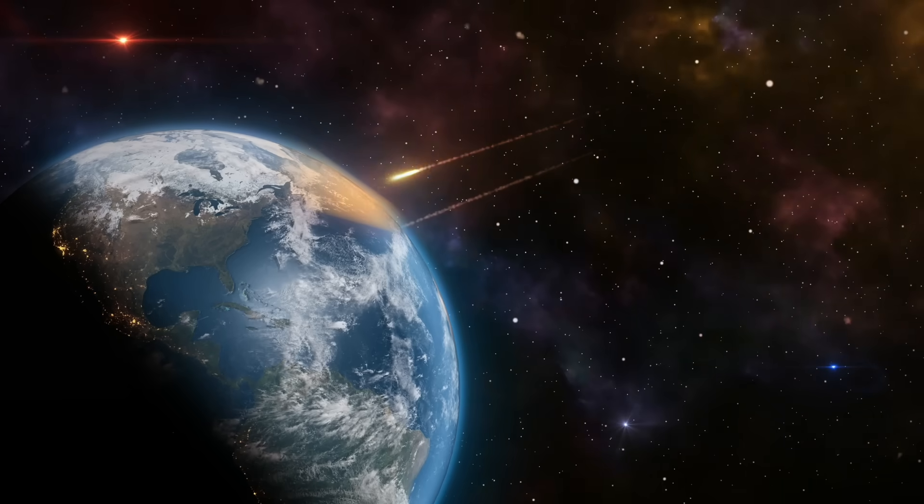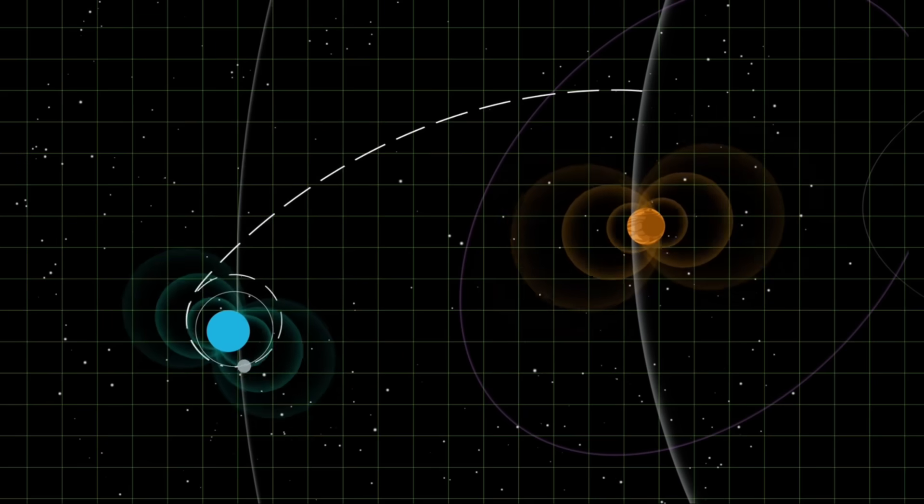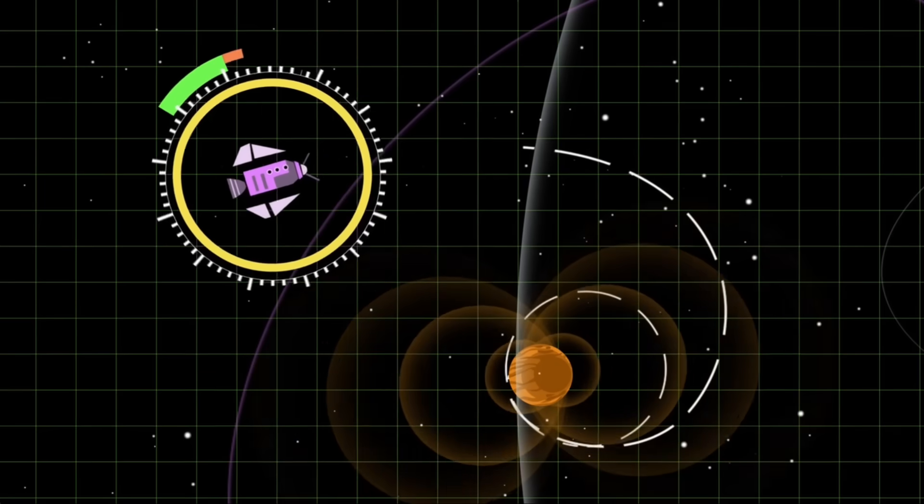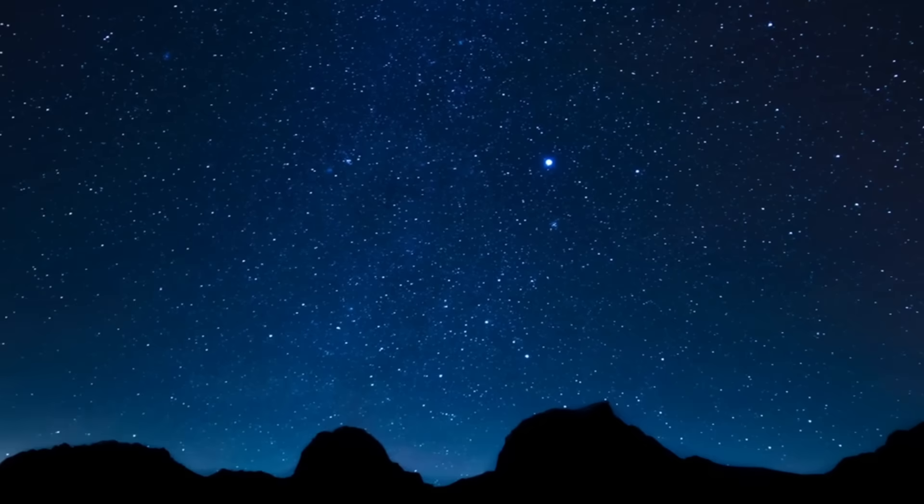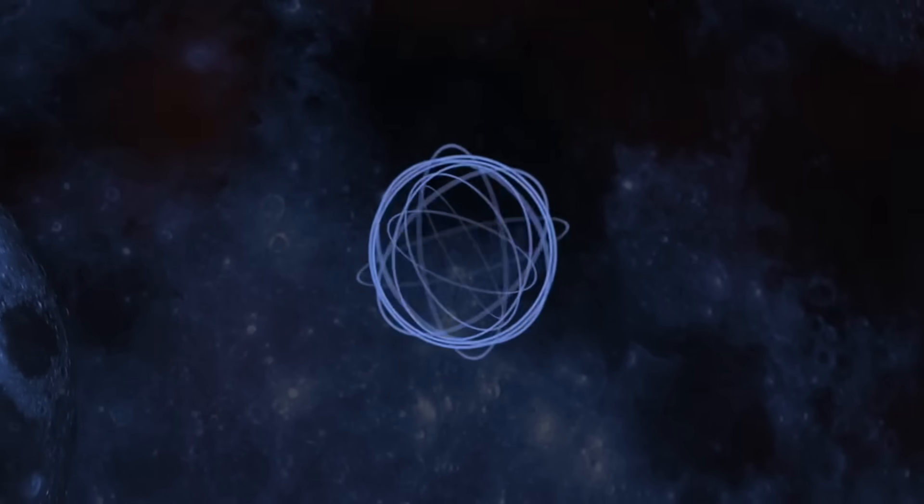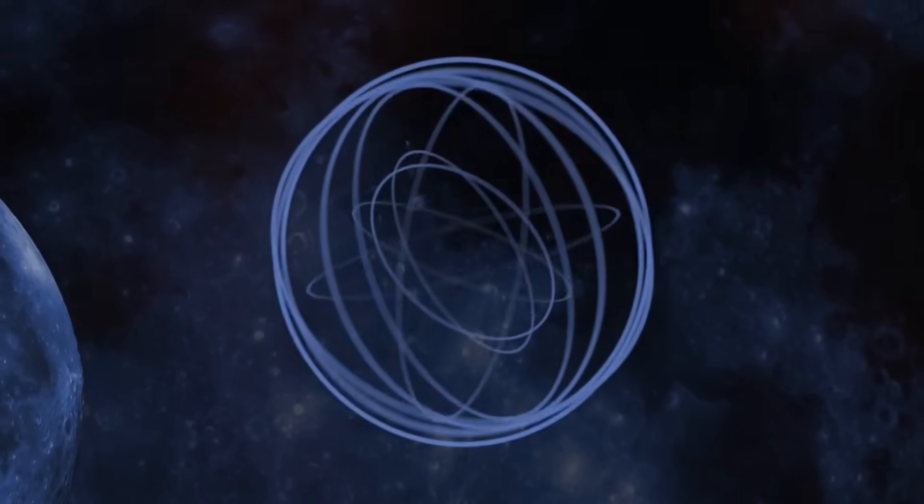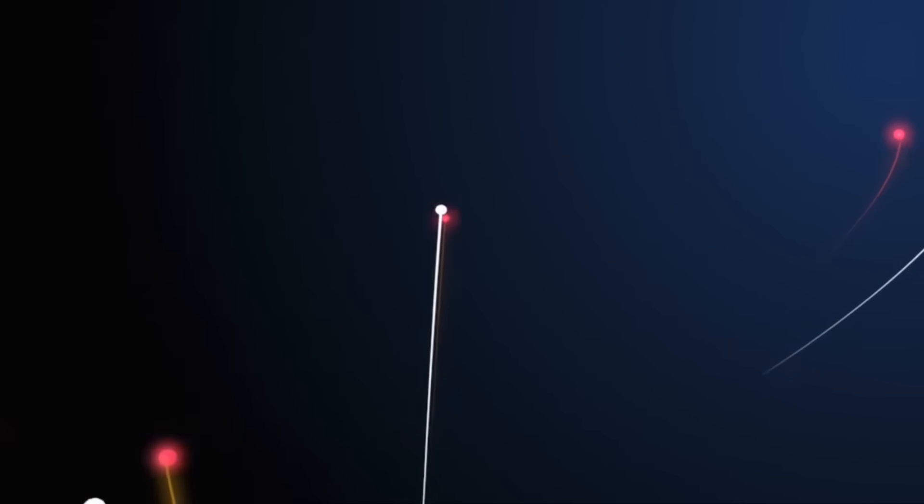Here's what happens. As 3I Atlas races through space, it continuously releases gas and dust, the coma we can see. But this material collides with the solar wind, that constant stream of charged particles our sun hurls into space. During these collisions, a process occurs that physicists call charge exchange. High energy ions from the solar wind strip electrons from the comet's molecules. And when these electrons fall back to lower energy states, they emit X-rays.